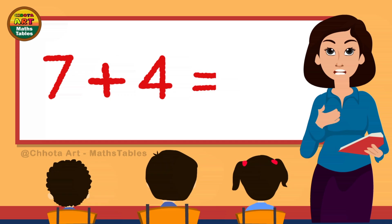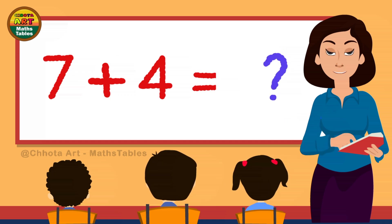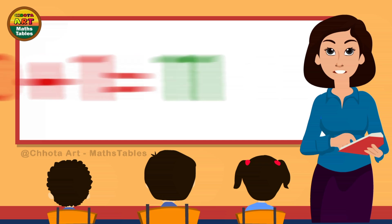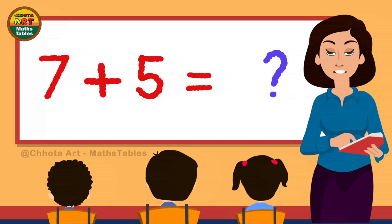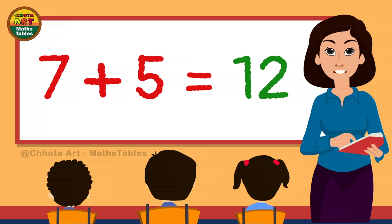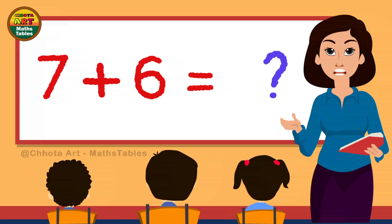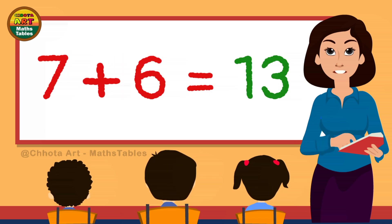7 plus 4 is... 7 plus 4 is 11. 7 plus 5 is... 7 plus 5 is 12. 7 plus 6 is... 7 plus 6 is 13.